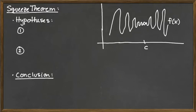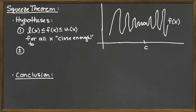The squeeze theorem has a couple of hypotheses. The first hypothesis states that we have a lower function L(x) which is less than or equal to the function we care about, F(x), and F(x) is less than or equal to an upper function U(x), for all x close enough to the value c that we're talking about.